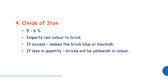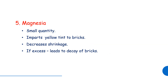The next ingredient is oxide of iron, which gives the brick its red color. In excess it produces a blackish color. The other ingredient is magnesia, which gives the brick a yellow tint and reduces shrinkage.